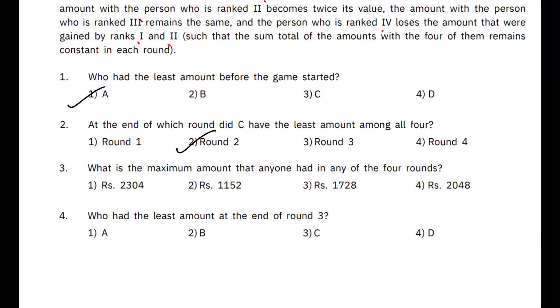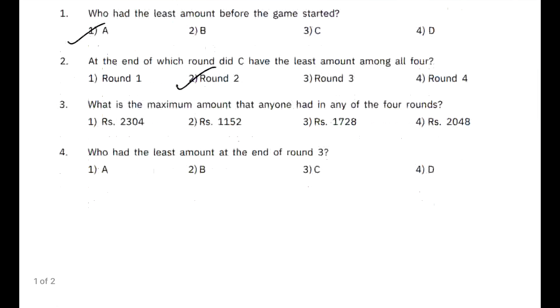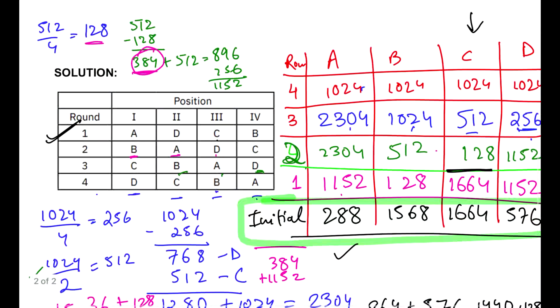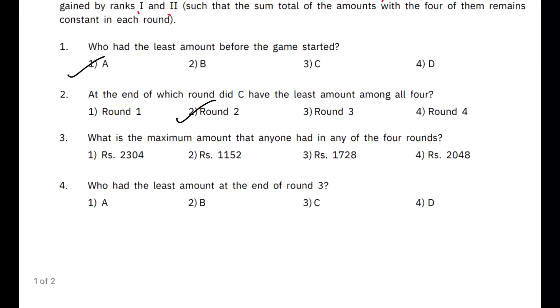What is the maximum amount that anyone had in any of the four rounds? Well, it is quite evident from our calculation. This is 2304 with A. So, person ka naam nahi poochha gaya hai. Sif amount poochha gaya hai. So, that is again option 1, 2304.